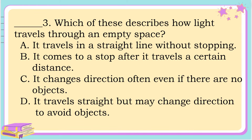Number 3. Which of these describes how light travels through an empty space? A. It travels in a straight line without stopping. B. It comes to a stop after it travels a certain distance. C. It changes direction often even if there are no objects. Or D. It travels straight but may change direction to avoid objects. The answer is letter A.